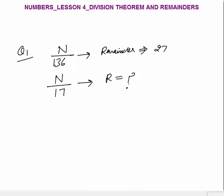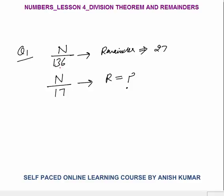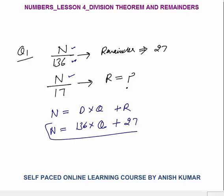Now let's discuss what kind of questions come on basic Division Theorem. Question says: a number N when divided by 136, the remainder is 27. The same number N when divided by 17, what will be the remainder? We know number equals divisor into quotient plus remainder. Number is N, divisor is 136, quotient is Q, remainder is 27. So N equals 136Q plus 27.